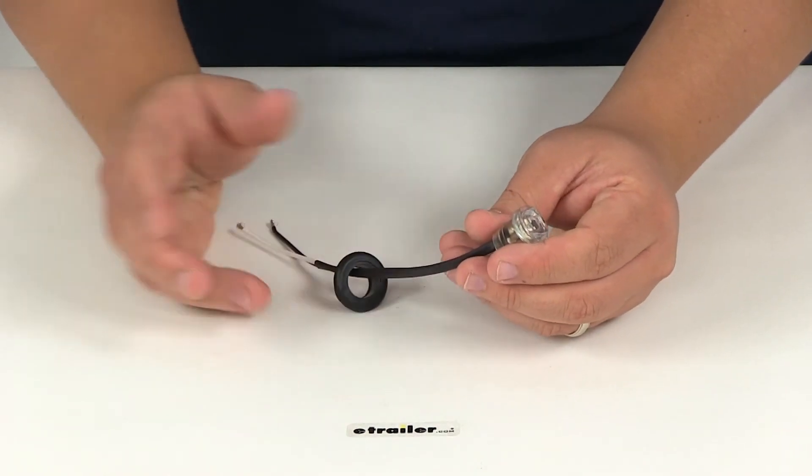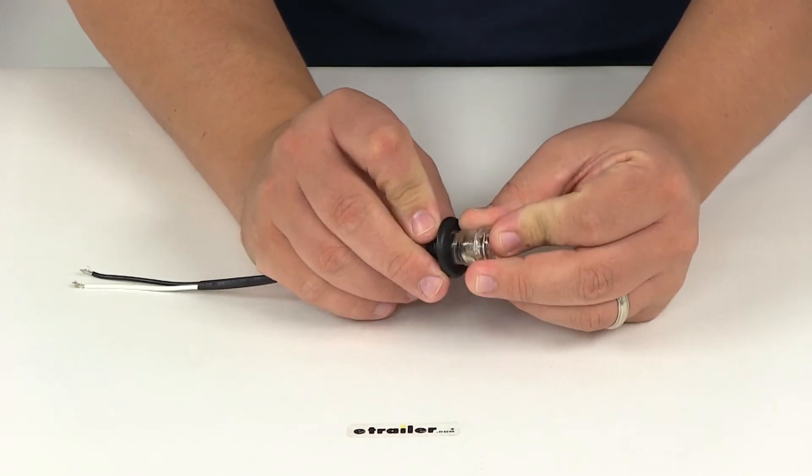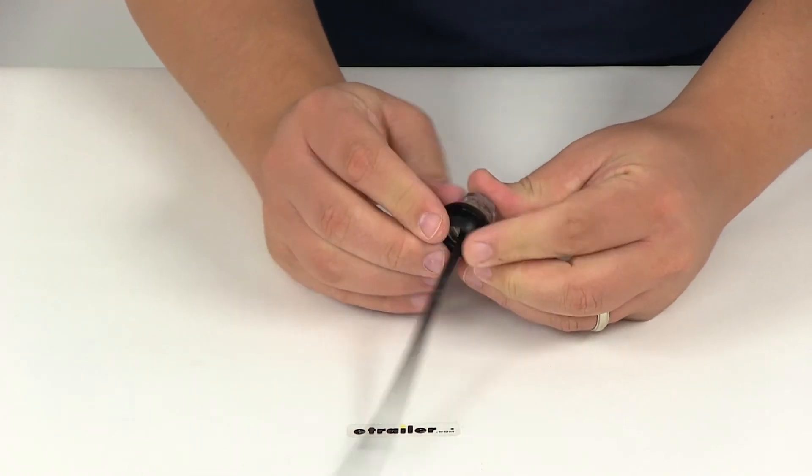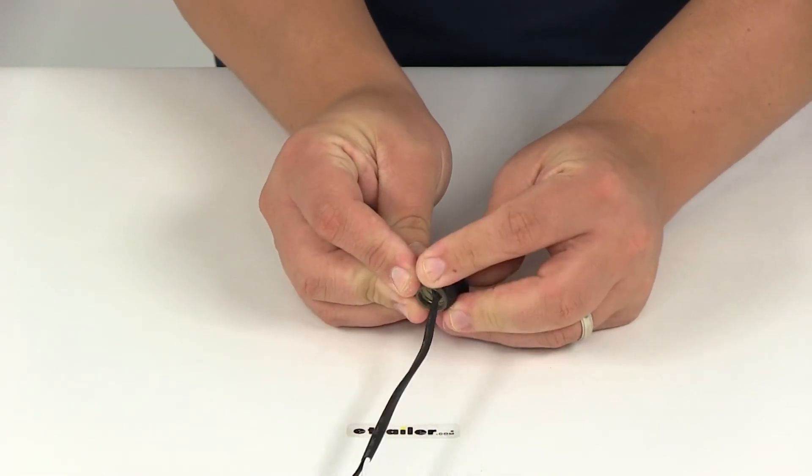You can see here that once you have it installed, you can install the grommet. Just take the light through it and then push the lens down and it seats right into the grommet for a nice tight secure fit.